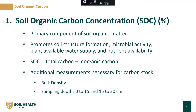The first measurement we're going to cover today is soil organic carbon concentration, reported as percent soil organic carbon. Soil organic carbon is the primary component of soil organic matter. It promotes soil structure formation, microbial activity, plant-available water supply, and nutrient availability. Soil organic carbon is calculated as the difference between total carbon and inorganic carbon. We are looking at carbon concentration. If you are interested in measuring carbon stock, you will need a few additional measurements, including bulk density and sampling from depths of 0 to 15 and then 15 to 30 centimeters.